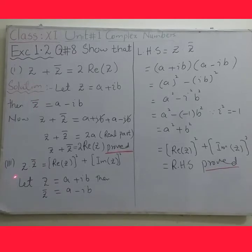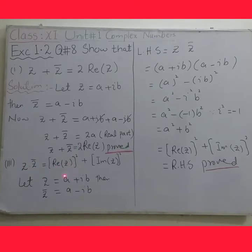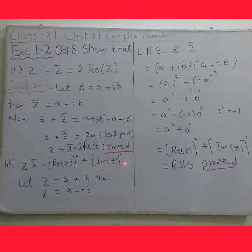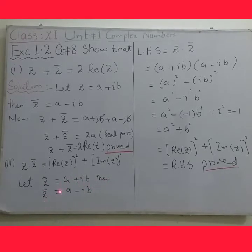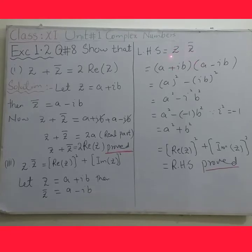Now Part 3: z into z conjugate is equal to [Re(z)]² plus [Im(z)]². Let z equal to a plus iota b. Then z conjugate equals to a minus iota b. Taking the left hand side: z into z conjugate — substituting values gives a plus iota b multiplied by a minus iota b.